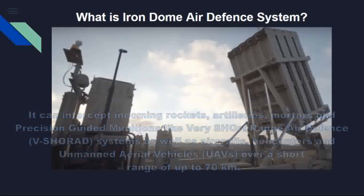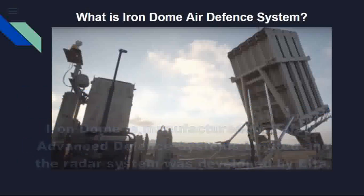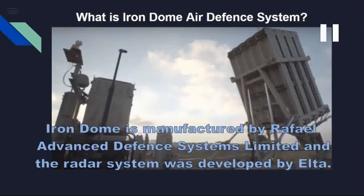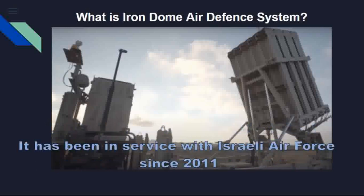The Iron Dome battery consists of 3 parts: a battle management control unit, a detection and tracking radar unit which can detect incoming missiles and aircraft, and a firing unit of 3 vertical launchers — each launcher having 20 missiles. The Iron Dome is manufactured by Rafael Advanced Defense Systems, an Israeli company, and the radar system was developed by Elta. It has been in service with the Israel Air Force since 2011.